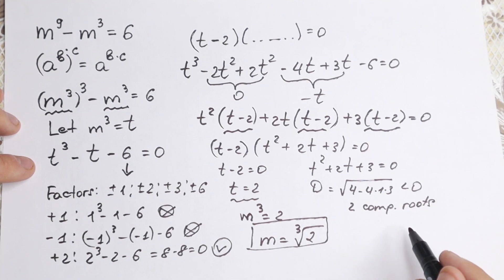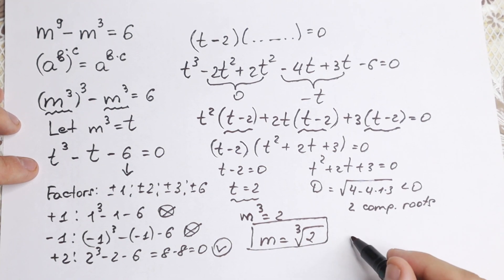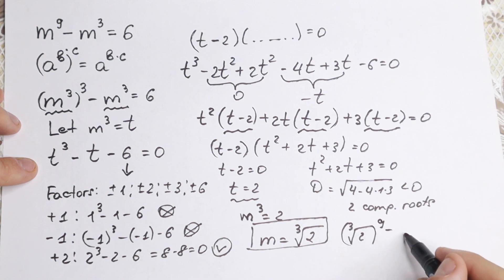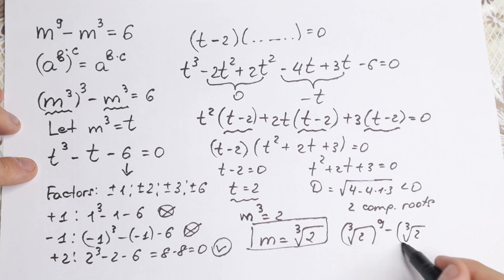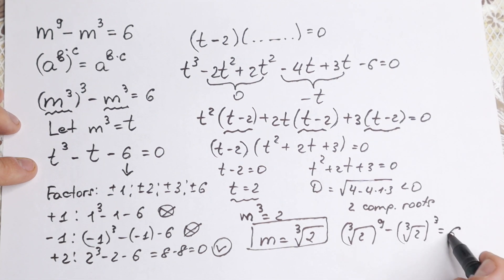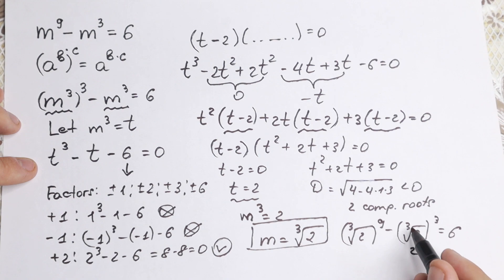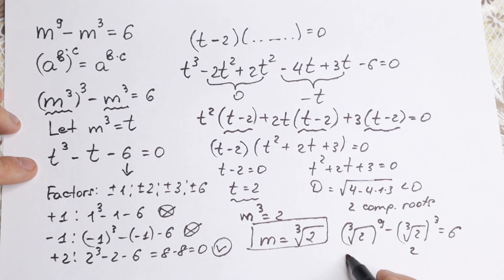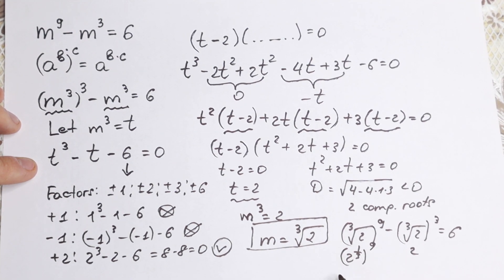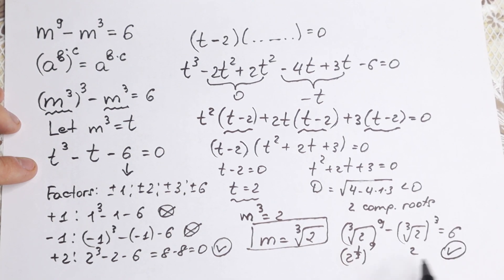We can verify this quickly. Plugging in: (∛2)⁹ minus (∛2)³ equals 6. Since the cube root of 2 is 2 to the power one-third, raising it to the ninth power gives 2³ = 8. And (∛2)³ = 2. So 8 minus 2 equals 6 — absolutely correct.